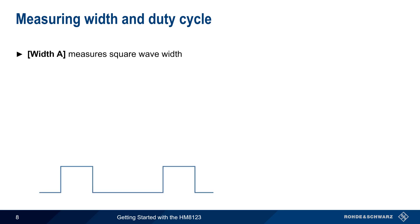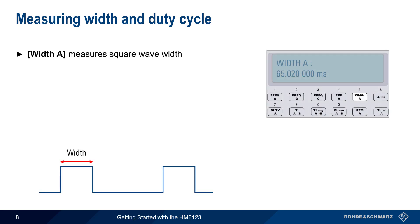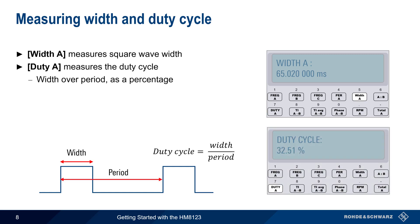The width button displays the width or on time of a square wave. Duty A measures the duty cycle, which is defined as the width over the period, expressed as a percentage. Like period and total, these functions are only available on input A.